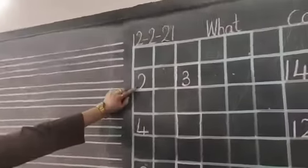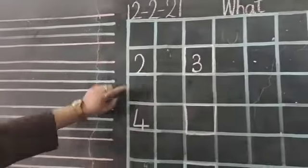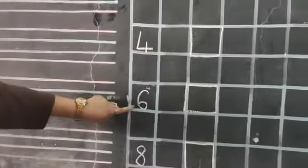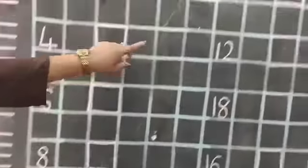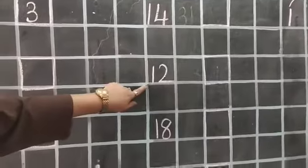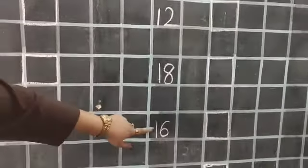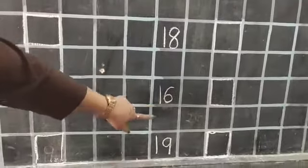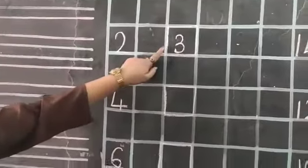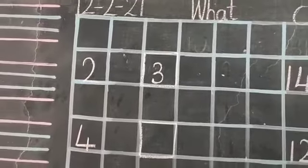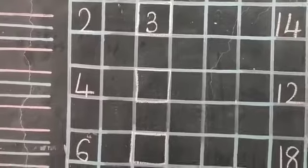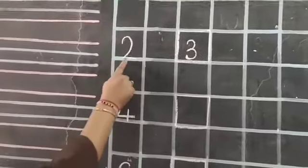So let's see the numbers: 2, 4, 6, 8, 10, 14, 12, 18, 16, 19. And I have drawn boxes. In these boxes you have to write the answer. Okay children? So let's start.